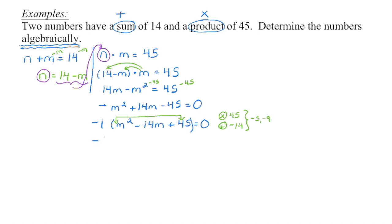I'm going to leave this negative one out front and set up my binomials. We have m times m, which gets us back to m squared. These are my outside and inside products. One times what gives us one of those numbers? Because the leading coefficient is one, I can choose either — so I'll put negative five as my first product, and then one times what gives me negative nine, and of course that's negative nine. Now we need to set the factors equal to zero. What value of m makes each factor zero? I don't need to worry about the constant factor, so m equals nine and m equals positive five.